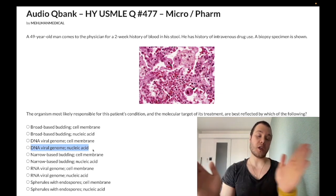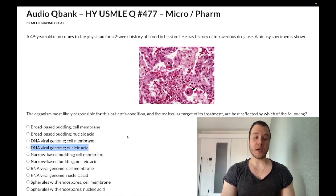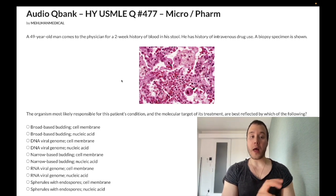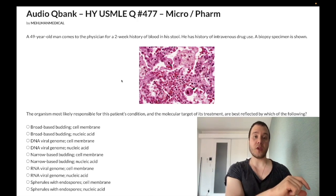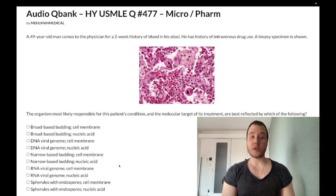If you have ganciclovir or acyclovir resistance respectively, the mechanism is alteration in viral thymidine kinase. The histology specimen here shows the classic owl eye appearance of CMV-infected cells — that's what the arrows are pointing to. Don't confuse owl eye CMV with the owl eye appearance of Reed-Sternberg cells in Hodgkin lymphoma, which are CD15/CD30 positive on lymph node biopsy — completely unrelated.